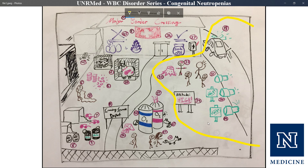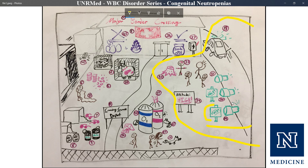The first and most common type is LAD type 1, caused by a defect in CD18. CD18 is a common flow cytometry marker for neutrophils, represented by a vote sign — you have to be 18 to vote. The second type, LAD type 2, is caused by defects in selectins, which are surface proteins on neutrophils that help them bind and egress into tissues, represented by a sale sign — items are selected to be on sale.